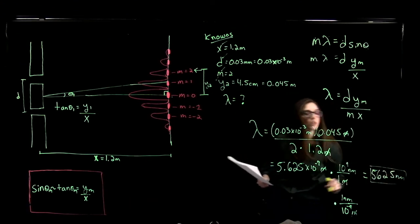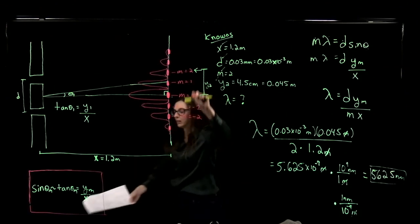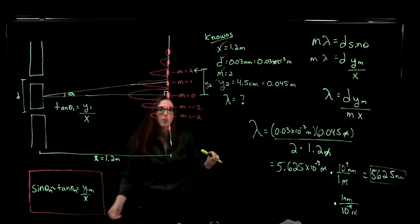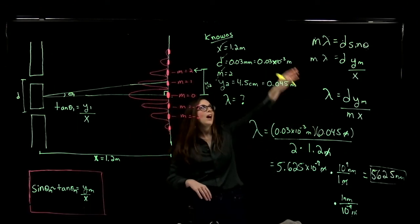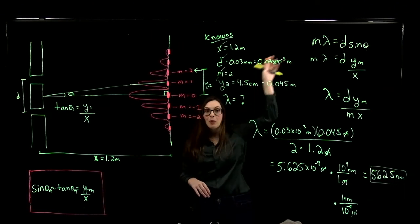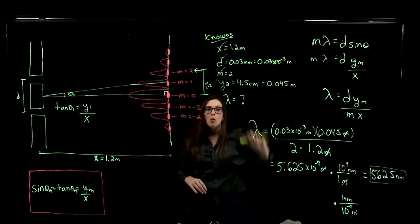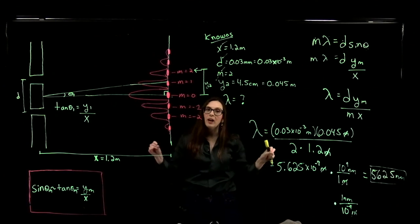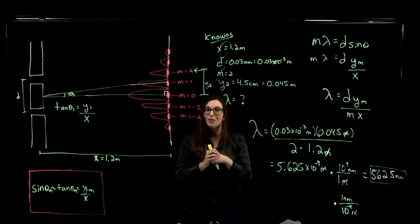Just by knowing the spacing between these bright points and using the small angle approximation with the double slit bright maxima interference equation, we're able to figure out the wavelength of light from our light source.